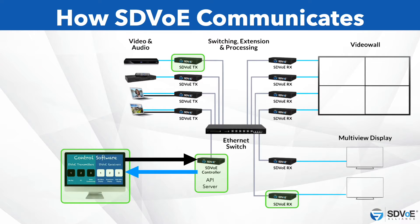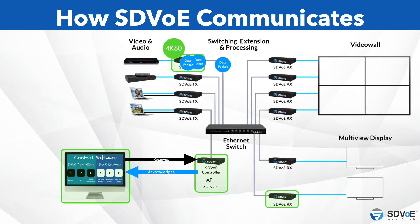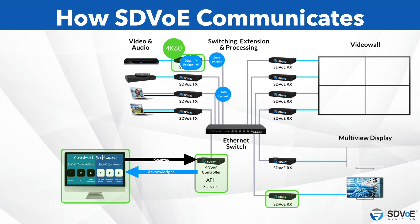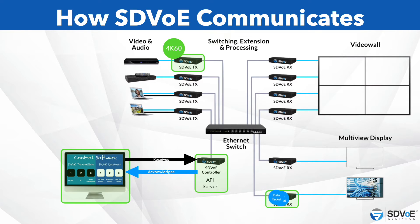When the API server receives the command from the client interface, it executes that command by communicating to the endpoints. For example, the user wants to start streaming a 4K 60Hz image from source A to display A. Once the API server receives and acknowledges the command, it will instruct the transmitter connected to source A to begin the stream and instruct the receiver attached to display A to connect to that stream. However, what would we do if we can't access the endpoints from the client interface, or worse still, the image sent to the display is all distorted?